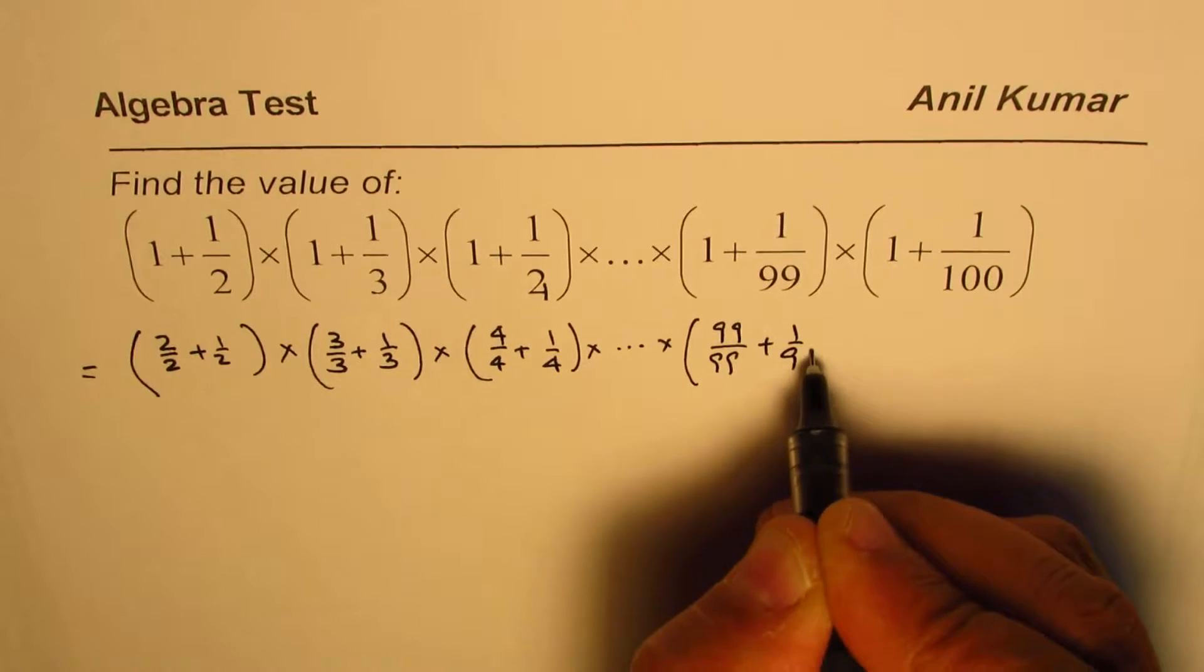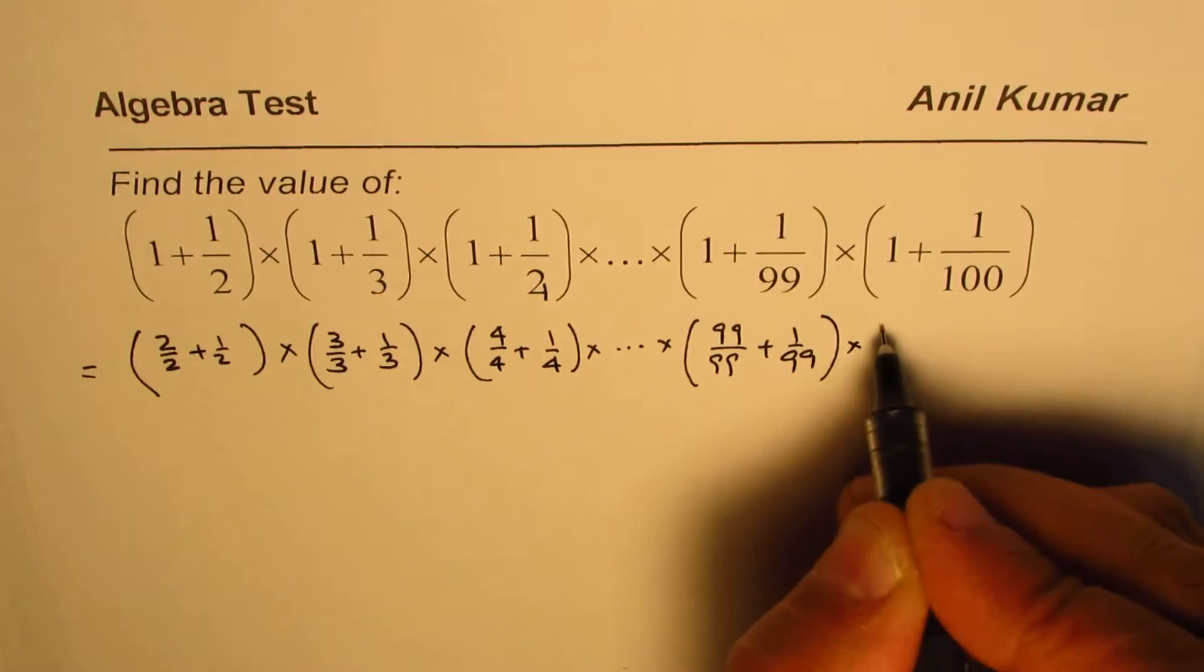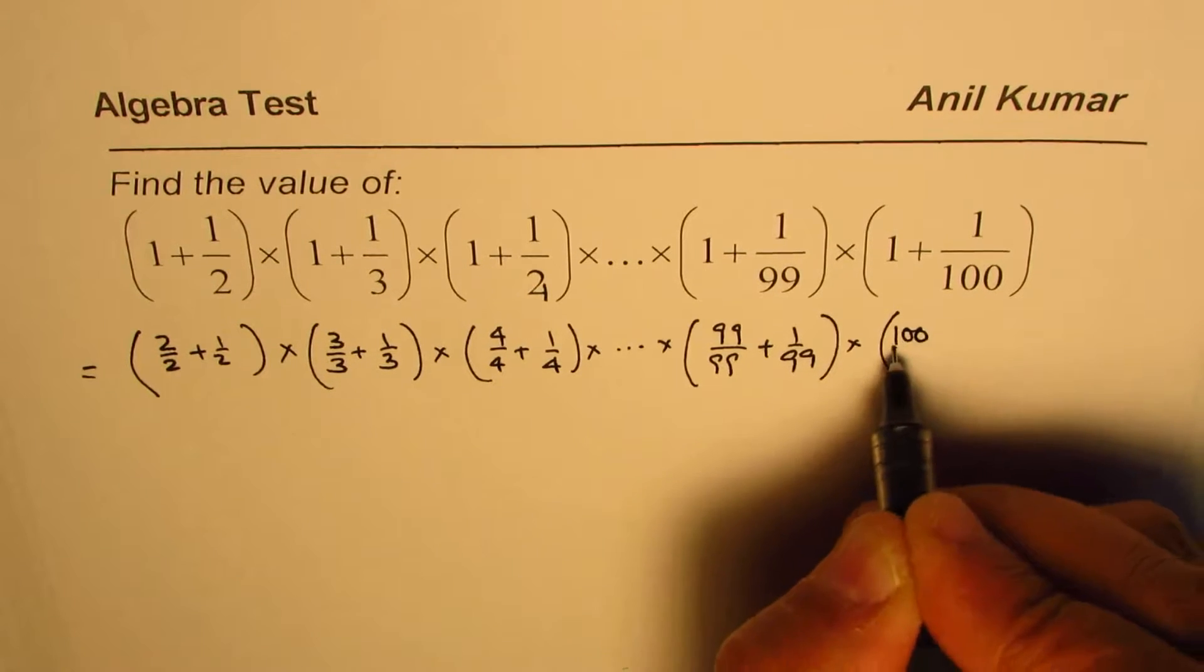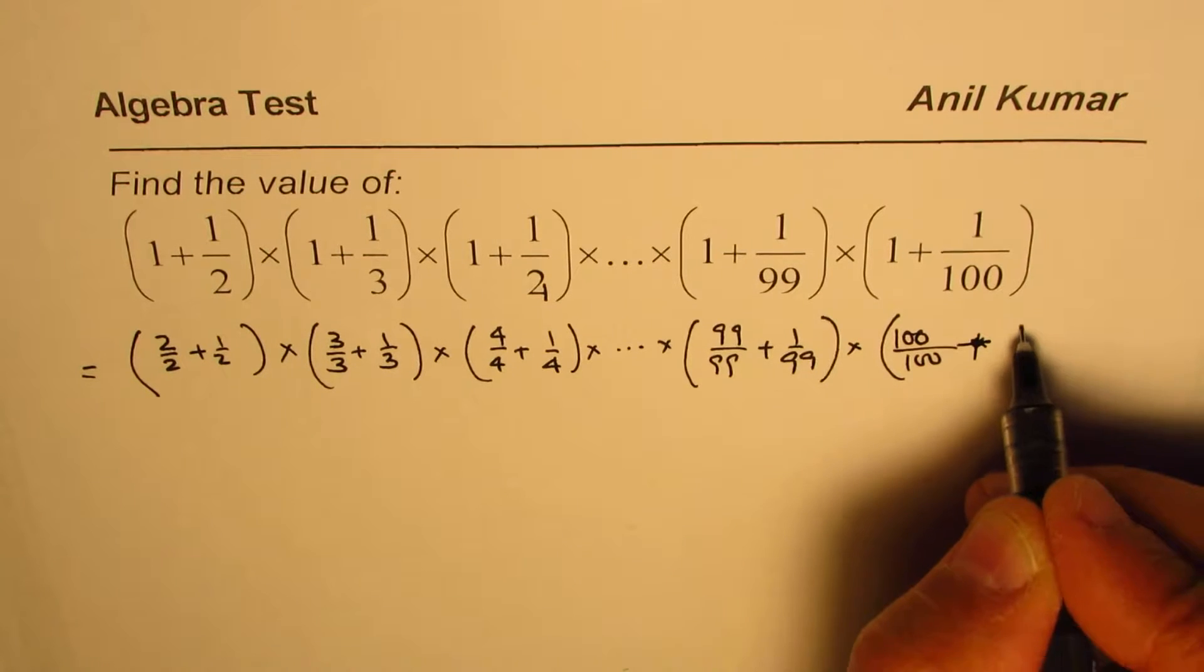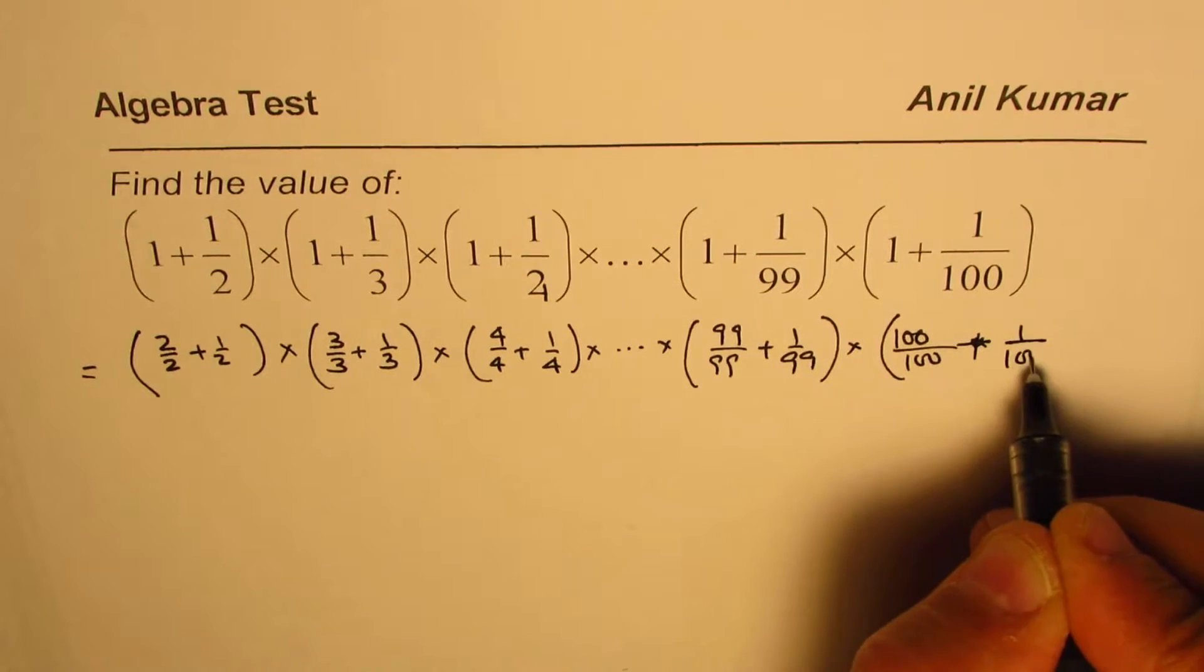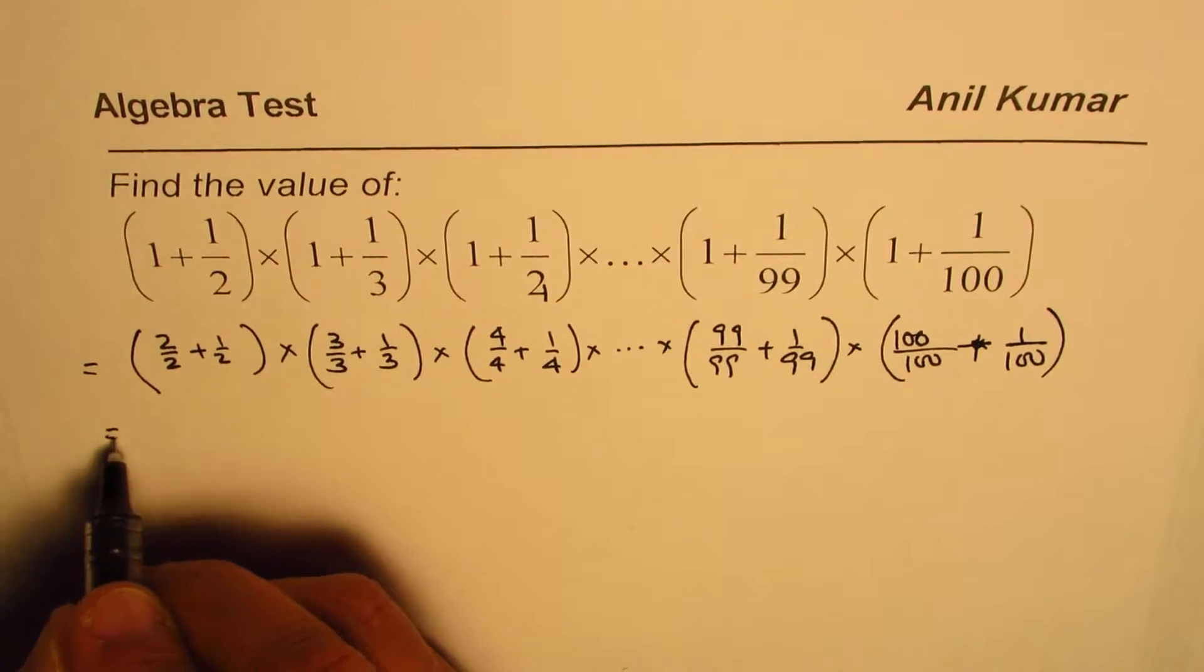Times one hundred over one hundred plus one over one hundred, correct? Okay, so when you add these fractions, what do you get?